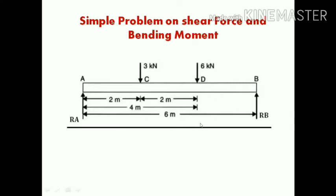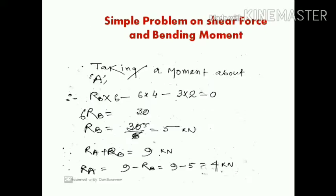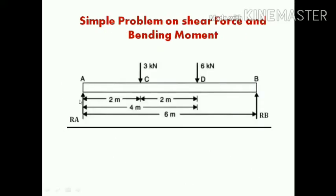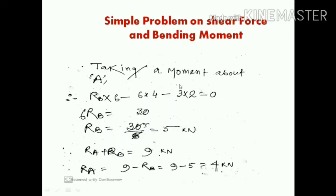Now let's find the value of Rb. To do this, we take moments about point A. Taking moments about point A: Rb into the total distance of 6 meters equals the sum of the moments of the applied loads about A.